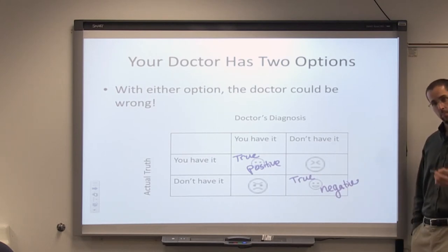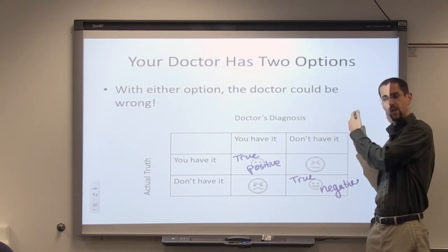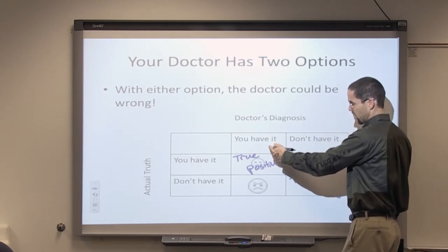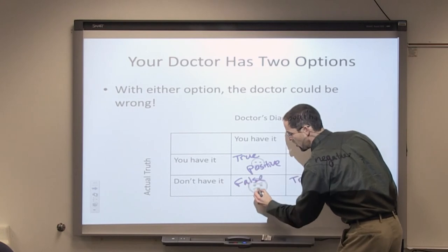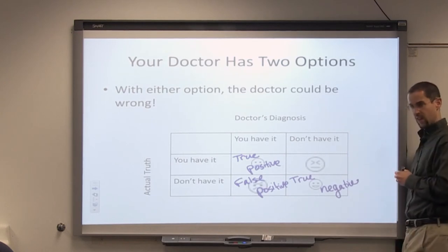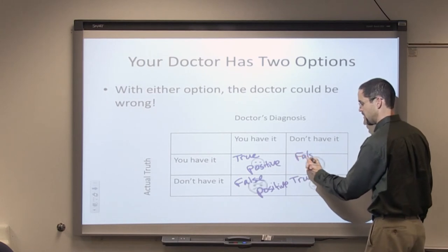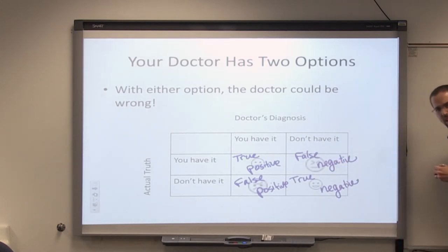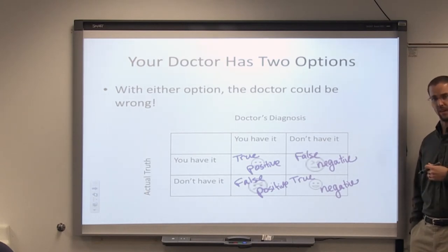Which one is a false positive? The doctor came back with a test result that was positive, but it was wrong — that's a false positive. The doctor says you have it, but you don't. And the last one is a false negative: the doctor said you don't have it, but that was false. That's some language we use to determine the validity of a specific medical test — how likely a particular test is to come back with false negatives or false positives.